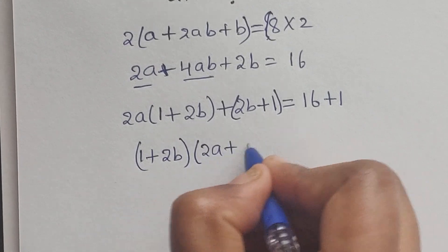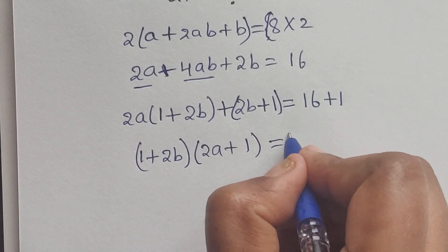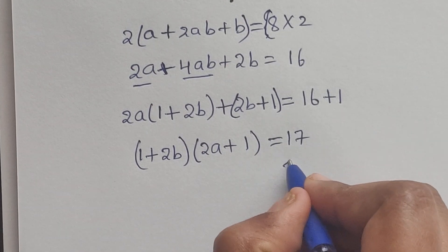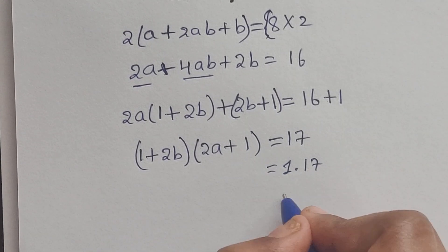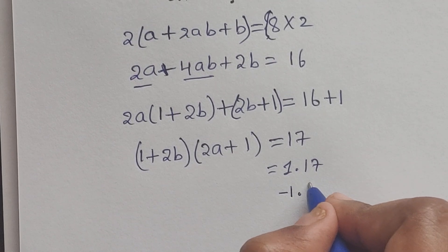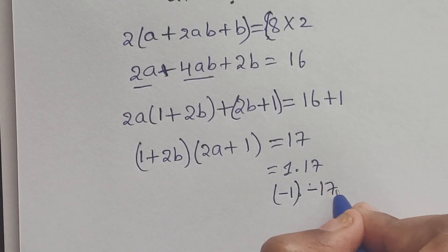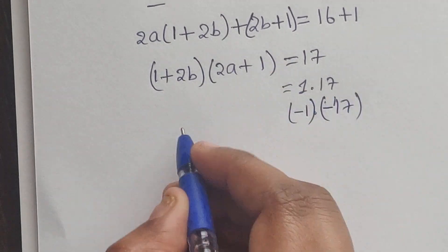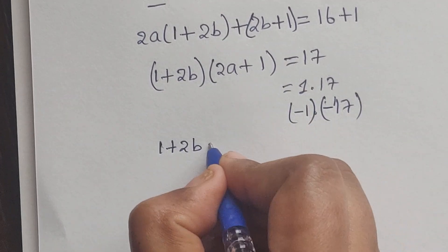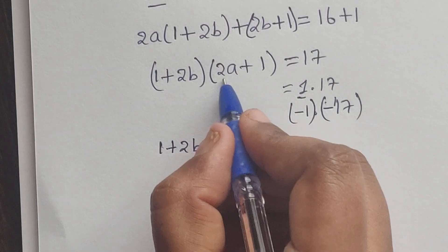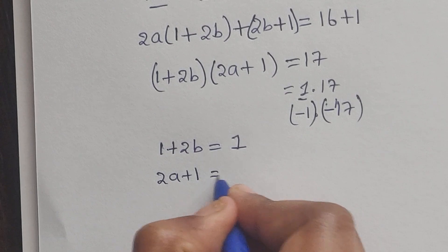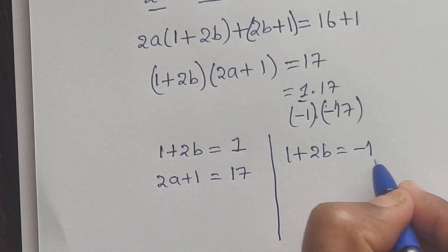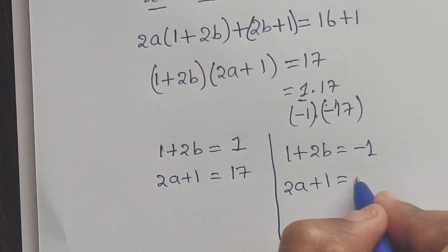So now we have (2a plus 1)(1 plus 2b) equals 17. What are the factors of 17? We can write 1 times 17, or minus 1 times minus 17. So we split the factors into two parts: case one, 1 plus 2b equals 1 and 2a plus 1 equals 17; case two, 1 plus 2b equals minus 1 and 2a plus 1 equals minus 17.